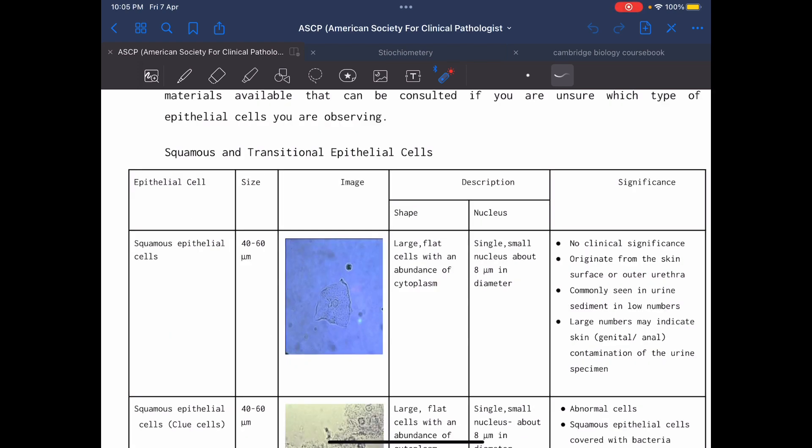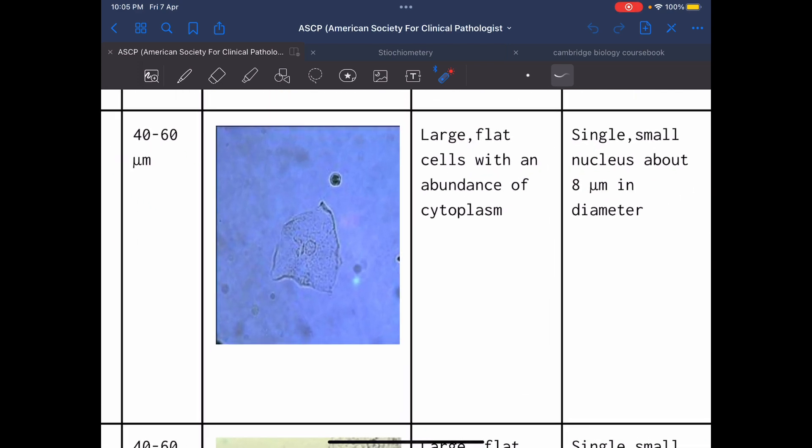This table will show us the characteristics of different types of epithelial cells. Here, first type, which is squamous epithelial cells. The size is 40 to 60 micrometers. As we see here, these epithelial cells are large and flat with abundance of cytoplasm.